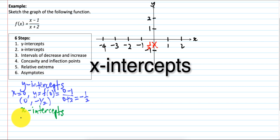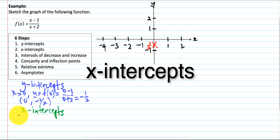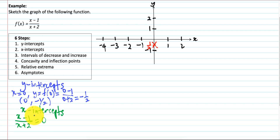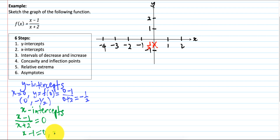Step 2: X-intercept. To find the X-intercept, F(x) is equal to 0. So (X minus 1) over (X plus 2) equals 0. This equals 0 if X minus 1 is equal to 0, so X equals 1. The point is (1, 0). We label it on the graph.